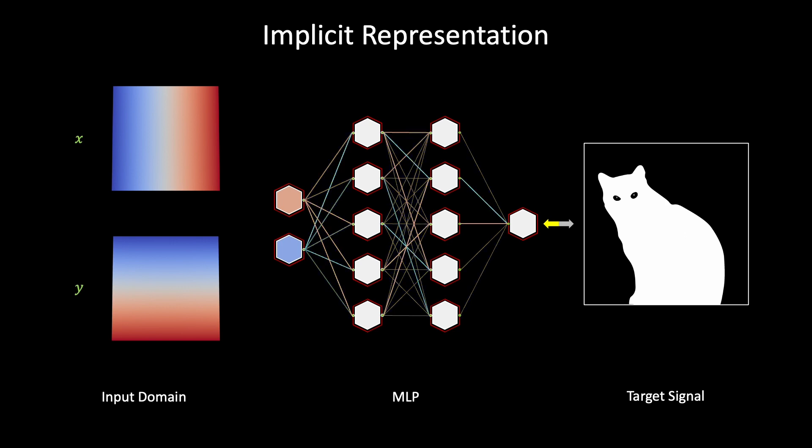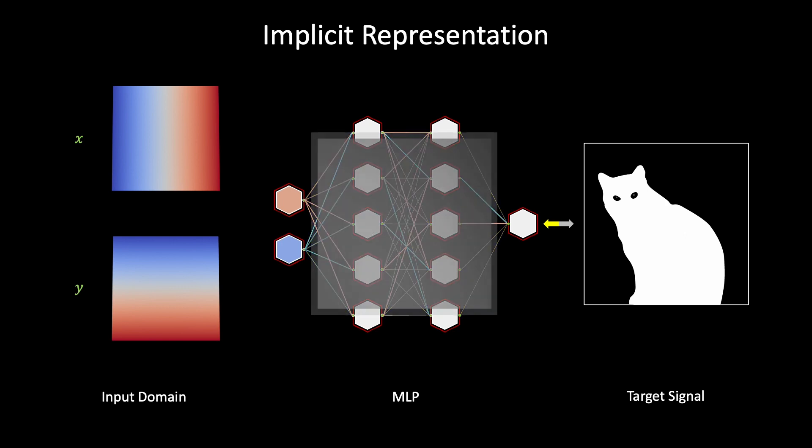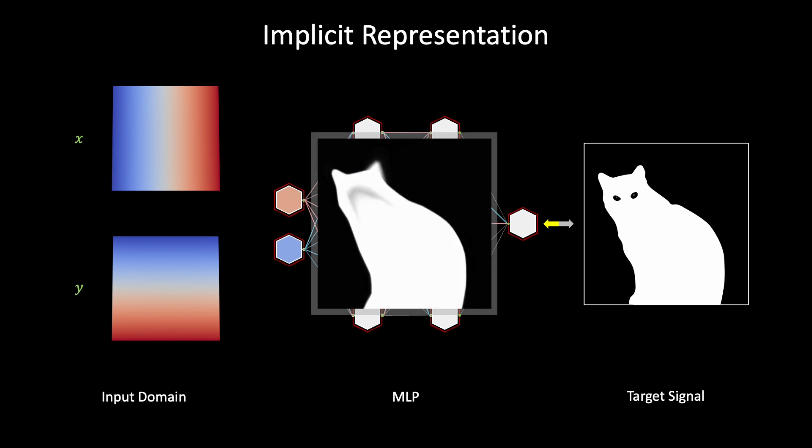The network nodes are then updated by minimizing the distance between predictions and the target signal. Through optimization, the signal information becomes embedded within the MLP layers. Consequently, any target signal point can be predicted by querying the corresponding coordinates to the MLP network.